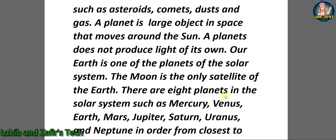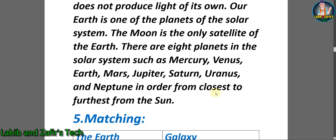There are eight planets in the solar system such as Mercury, Venus, Earth, Mars, Jupiter, Saturn, Uranus and Neptune in order from closest to furthest from the sun.